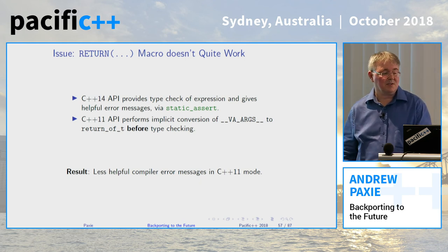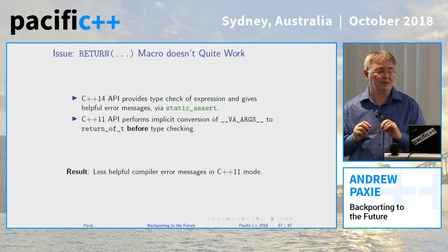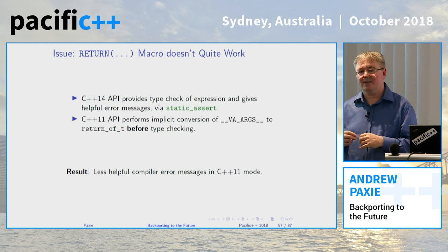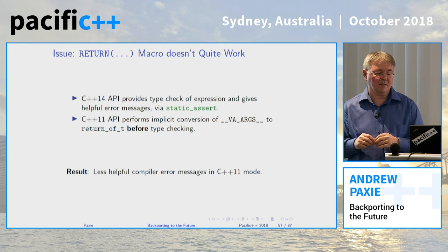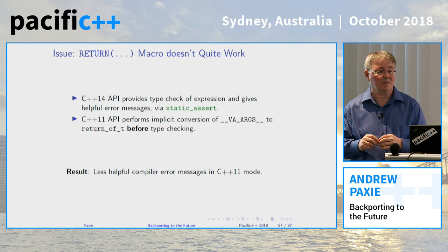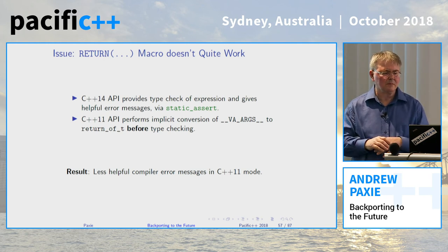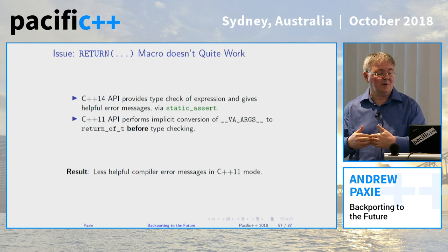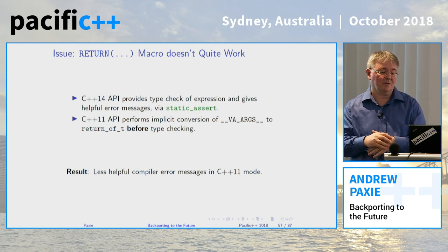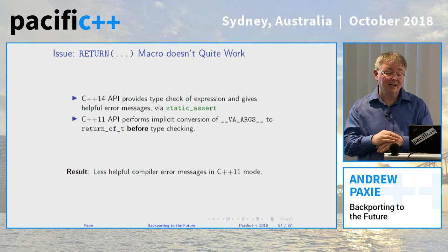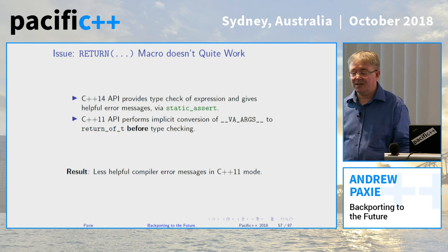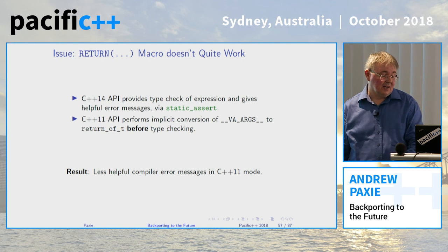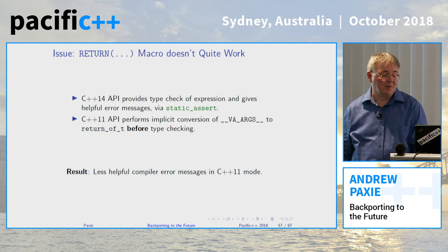Returning to the RETURN macro a little bit — it doesn't quite work because of the eager evaluation of __VA_ARGS__. In the C++14 API, we provided a bit of help to short-circuit the compilation process if we get the types of our arguments wrong — we run static asserts inside that handle_return function. Those are still in the code, but they're not doing the job they should have done because they never get called or evaluated, because we've already got an error message due to an implicit conversion failing earlier in the code. So the end result is some less helpful error messages.